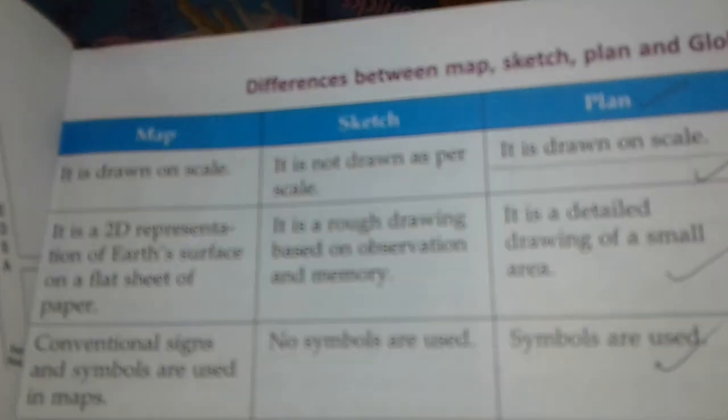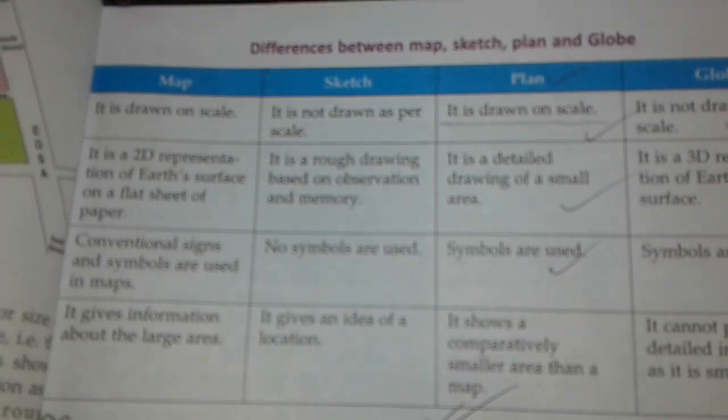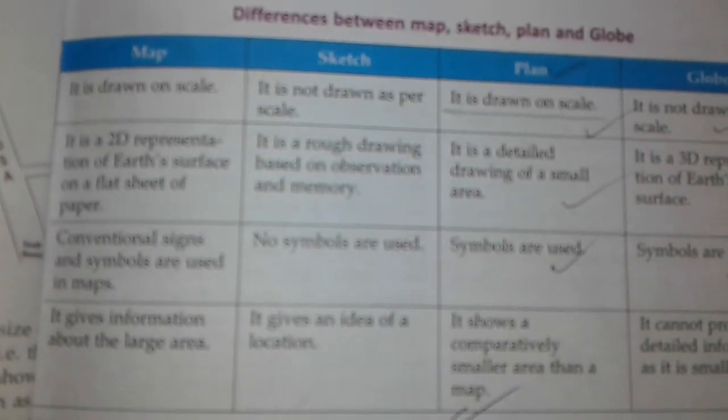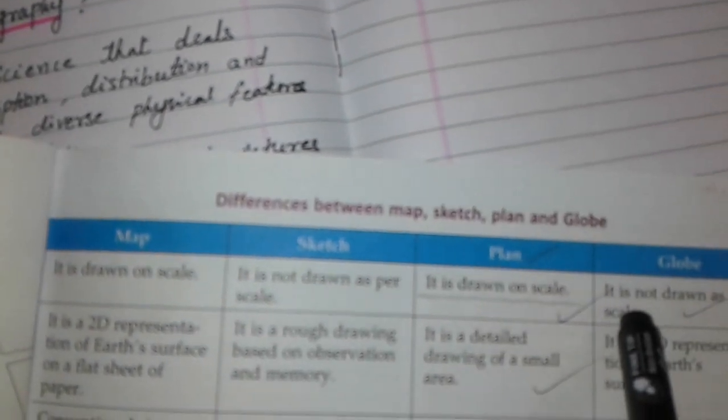Now we will discuss the differences between map, sketch, plan, and globe. A map is drawn on a scale, but a sketch is not drawn as per the scale. A plan is drawn on a scale, while a globe is not drawn as per the scale. A map is a 2D representation of the earth's surface on a flat sheet of paper, and a sketch is a rough drawing based on observation and memory.